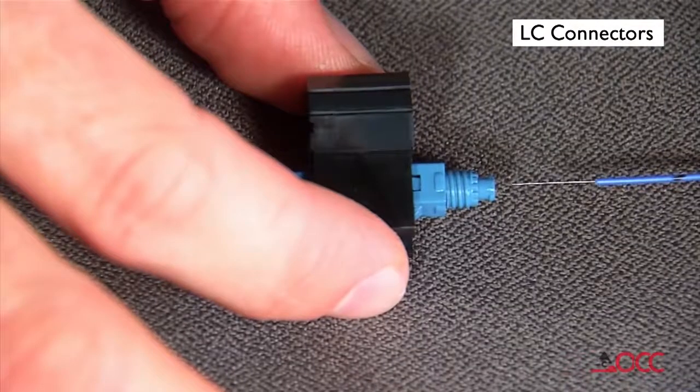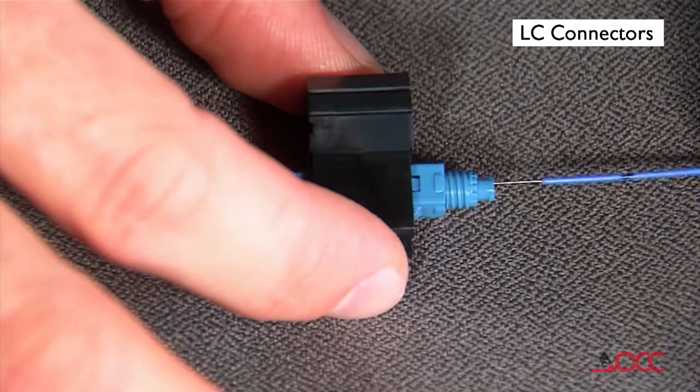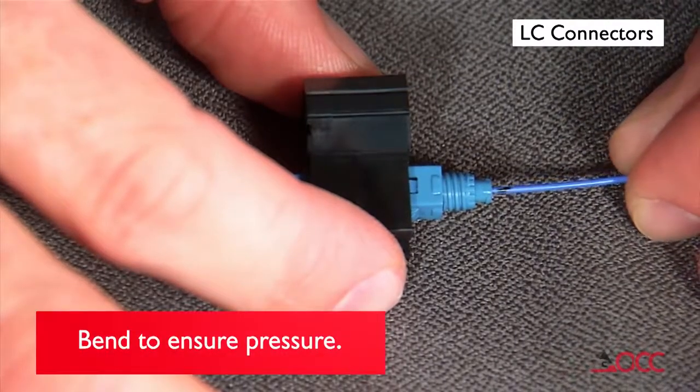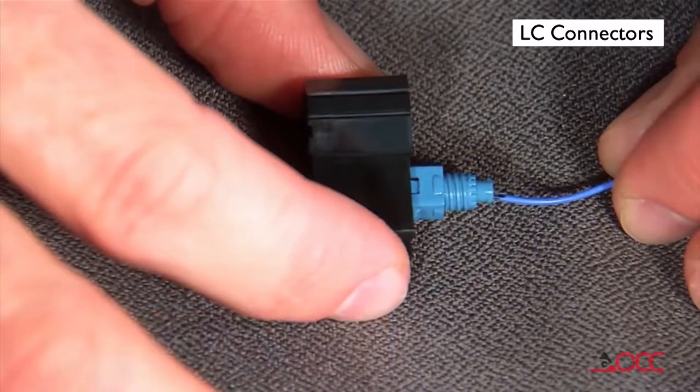Insert the cleaved fiber into the rear of the connector until the mark aligns with the back of the connector body. Make a bend in the fiber to maintain slight pressure on the connection.